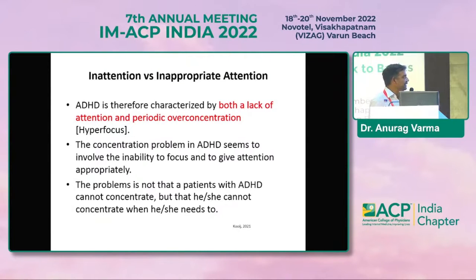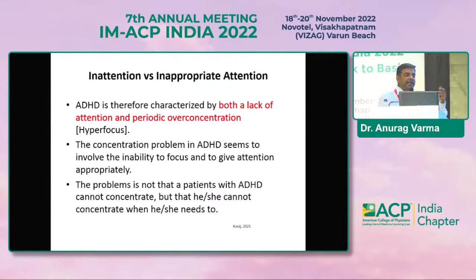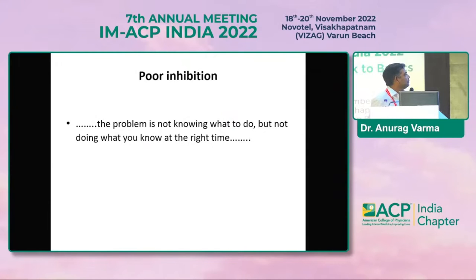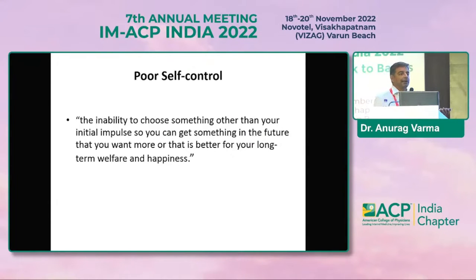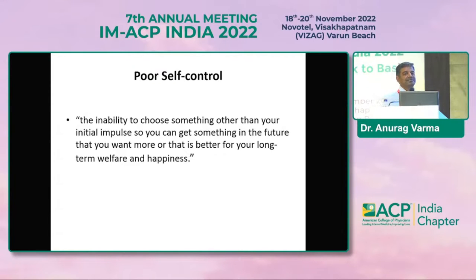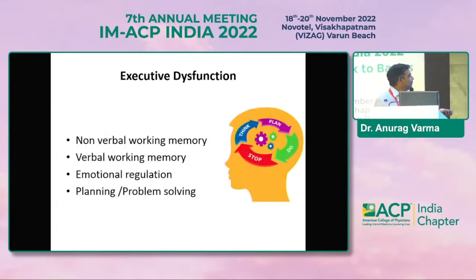The concentration problems in ADHD involve the inability to focus and give attention appropriately. The problem is not that patients do not know what to do — the timing for them is mostly wrong. In between a meeting, if some idea comes, they are unable to stop themselves and will blurt it out. Poor self-control happens a lot of times. You can imagine a small child doing something and an adult doing similar things — getting fidgety and restless, and then being embarrassed. Executive dysfunction is knowing what to do but failing to effectively plan it, do it, and know when to stop.